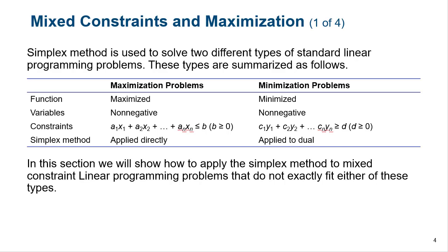Normally our constraints are always set up such that we have some expression less than or equal to a positive number. One of the large requirements in order to use the simplex method is that our constraints are always less than or equal to a positive number. When we do the minimization problems, we get the greater than or equal to when it's applied to the dual.